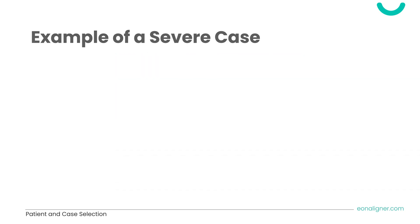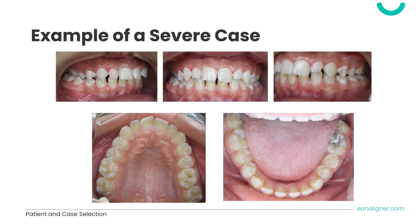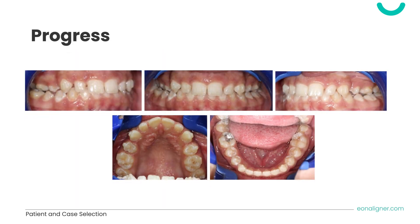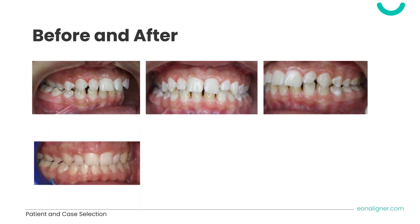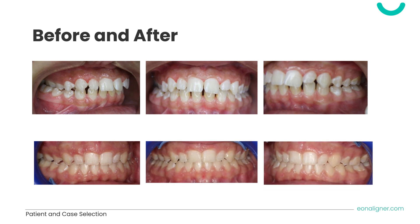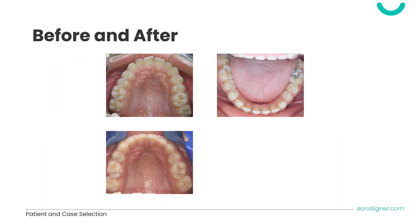The last example is a severe case — a class II case treated with extraction of the upper first premolars. Notice the sequential movements progressing. Here is the before and after: a class I canine relationship has been achieved and the extraction space is fully closed.